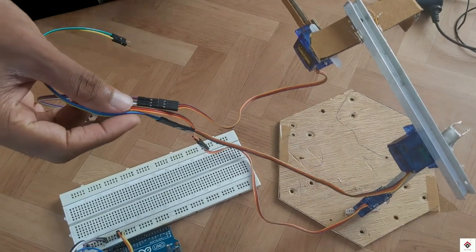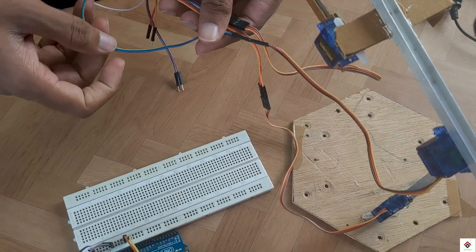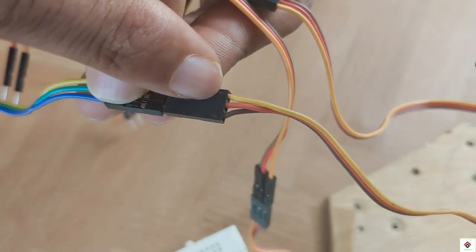From the servo motors, I'll take the positive and negative terminals common onto the breadboard, which are red and brown.